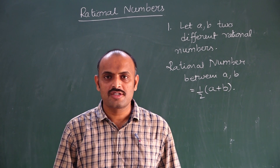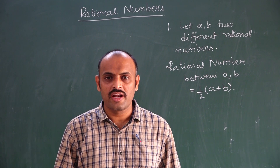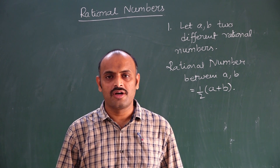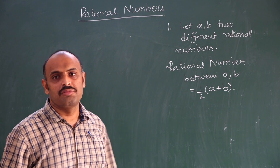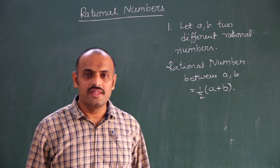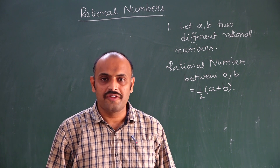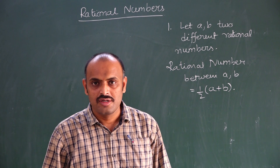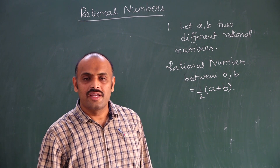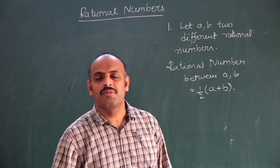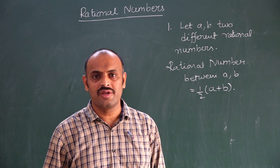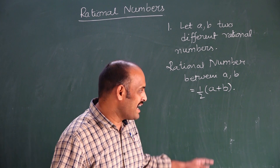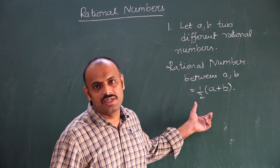Good morning students. Welcome to Narayanah online classes. Today we are going to see a chapter called rational numbers — specifically how to find rational numbers between two given rational numbers. There are three methods to find a rational number between two rational numbers. Let us see the first method, which is the average method or mean method.